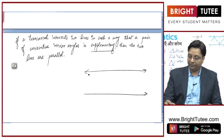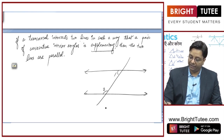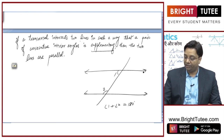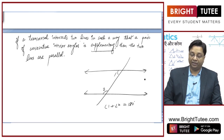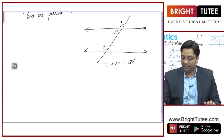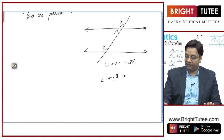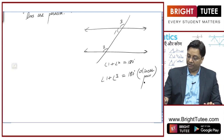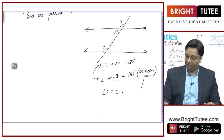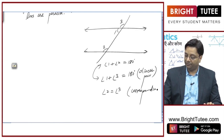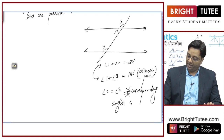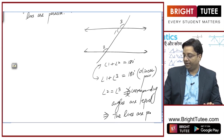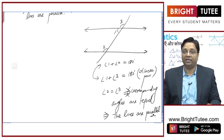For the converse: if this angle plus this angle is given as 180 degrees, we use the corresponding angles axiom. Let it be angle 3. Then angle 1 plus angle 3 equals 180 degrees by a linear pair. Comparing these, angle 2 equals angle 3, which are corresponding angles. Since corresponding angles are equal, the lines are parallel by the corresponding angles axiom.